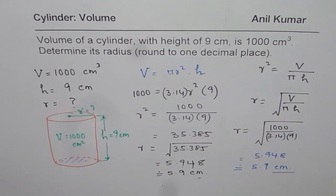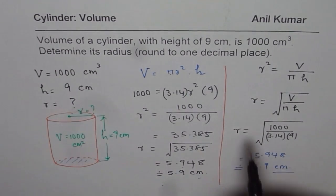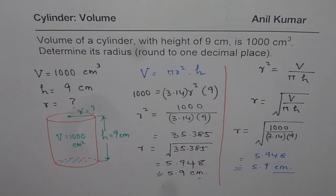So this is an alternate method. And in this method, what we have done is we have rearranged the formula in terms of r and then calculated. So you could also apply this method to solve for radius if volume and height of a cylinder is given to you.